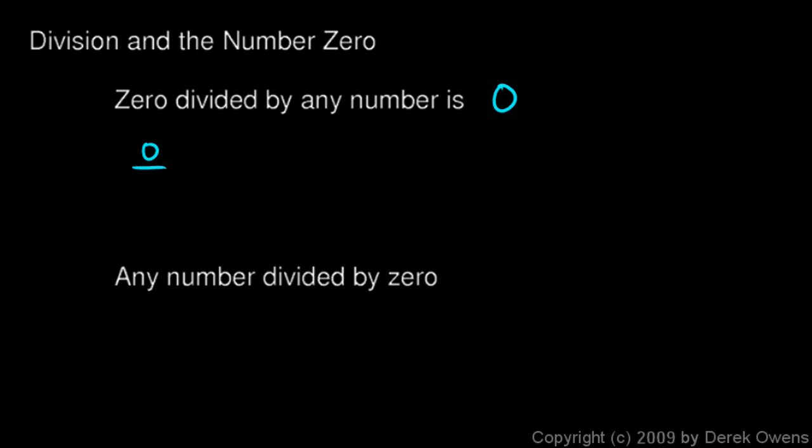Just some quick examples. 0 divided by 1 is 0. 0 divided by 7 is 0. 0 divided by x is 0, and that's true for any number x. 0 divided by 3a² times π will be 0. 0 divided by anything is equal to 0.